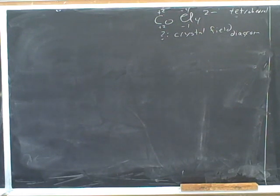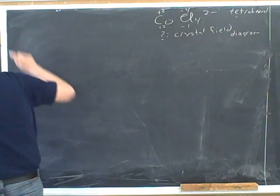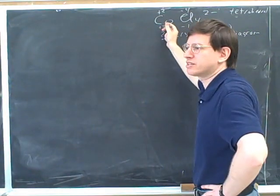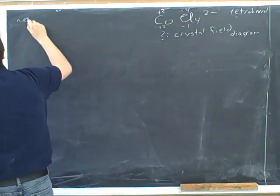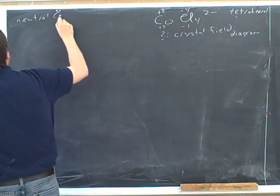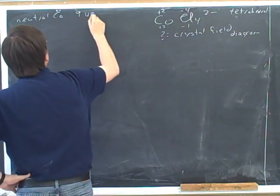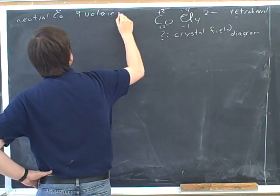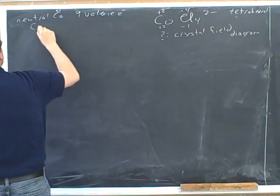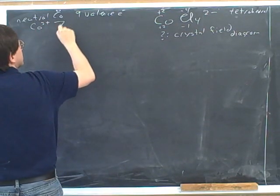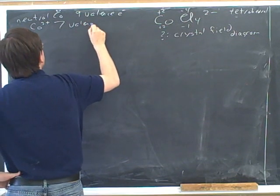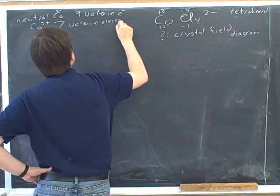Okay, good. So you figured out the oxidation number here was positive 2. I think you saw that neutral cobalt would have 9 valence electrons, so cobalt 2 plus has 7 valence electrons.